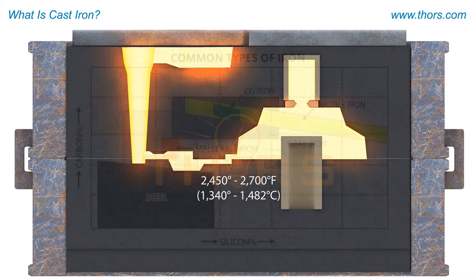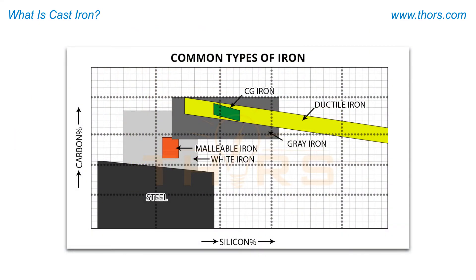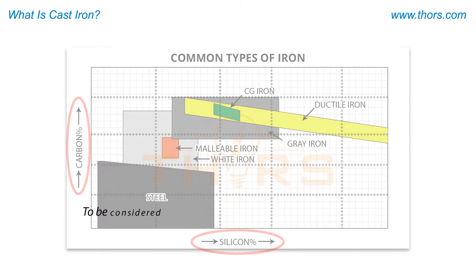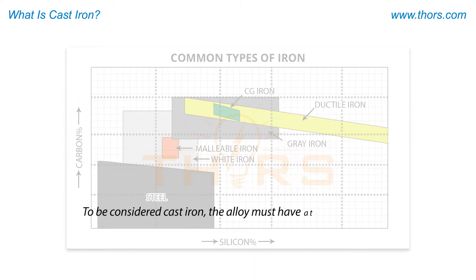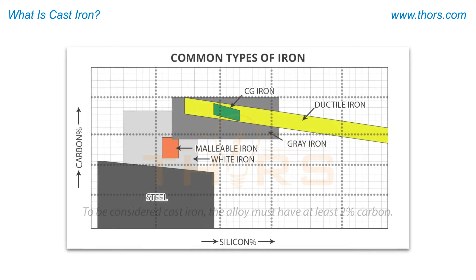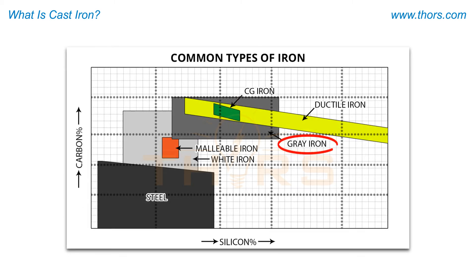This graph displays cast irons in terms of carbon and silicon content. To be considered cast iron, the alloy must have at least 2% carbon. Some of the types include grey iron, white iron, CG iron, ductile iron, and malleable iron.